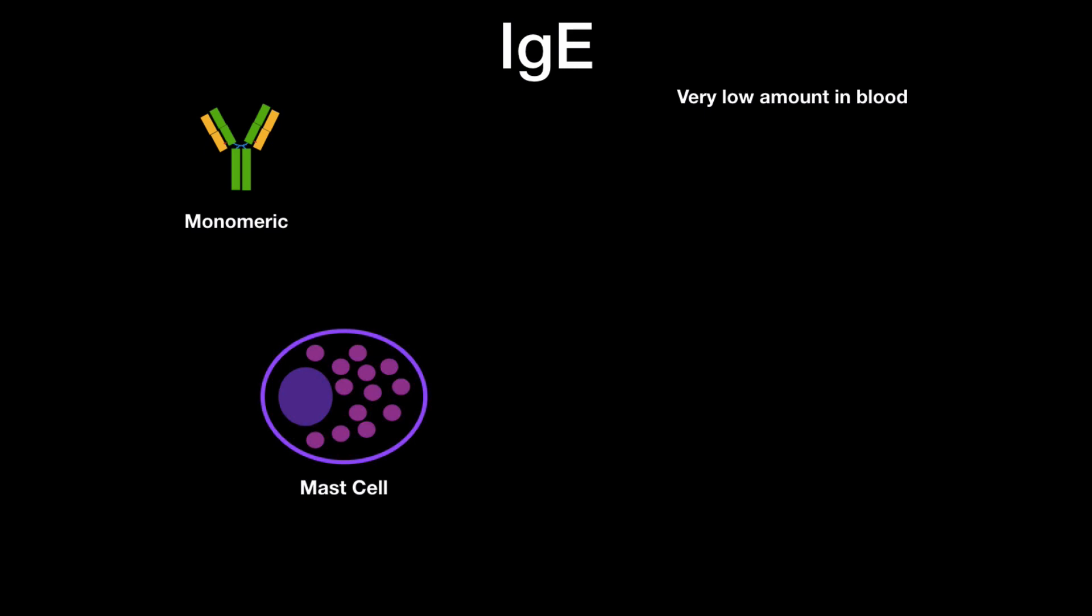Sensitization is the first step of allergies. It's when, let's say, you breathe in pollen, for example, for the first time, and then the pollen is going to get into the mucosal epithelium presented to antigen-presenting cells, and then that's going to cause an immune response producing IgE.